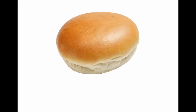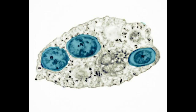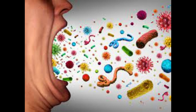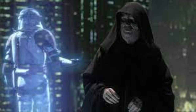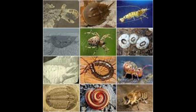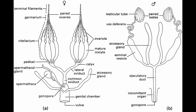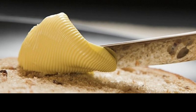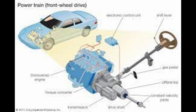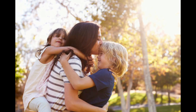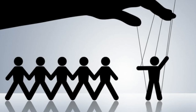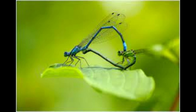Wolbachia are believed to be one of the most abundant intracellular bacteria, with infection rates up to 66% depending on the arthropod species. When inside the arthropod, they infect the reproductive tissues of the host, where they can spread to future generations through vertical transmission. Wolbachia can only be passed on from mother to offspring, so they have developed ways to manipulate host reproduction for their own benefit.